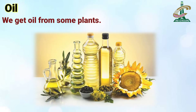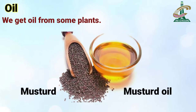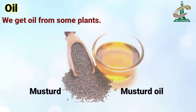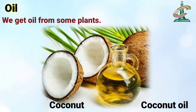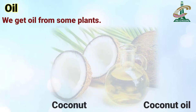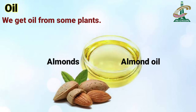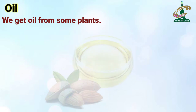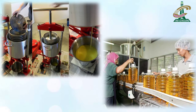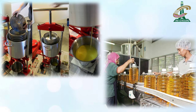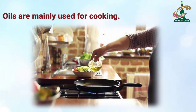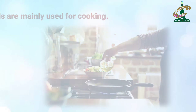We get oil from some plants. Plants like mustard give us mustard oil, from coconut plant we get coconut oil, and from almonds we get almond oil. اس کا oil کیسے نکالا جاتا ہے؟ Mustard، coconut and almond کو factories میں grind کرکے پیس کے اس سے oil نکالا جاتا ہے. Oils are mainly used for cooking, and we also apply some oils on our hair.